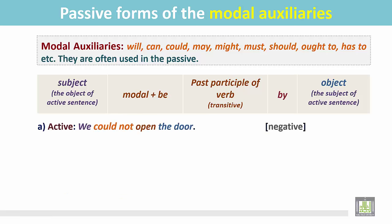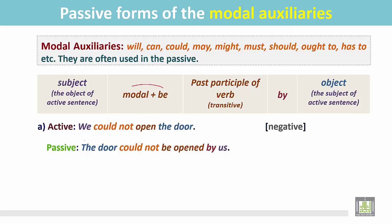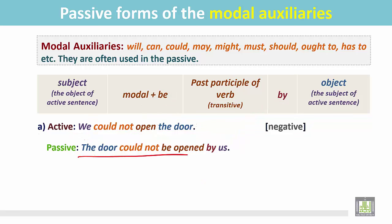Another example. 'We could not open the door.' This is an active sentence in the negative form. The door is the object for the verb 'open.' In the passive, the object becomes the subject: 'the door.' According to the structure, modal with be, and since it is negative, we use 'not' in between: 'could not be.' The verb should be in the past participle form: 'opened by us.' The door could not be opened by us.